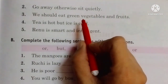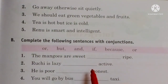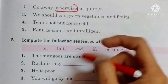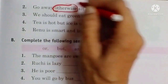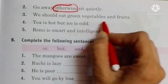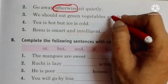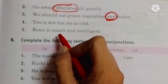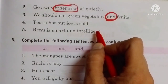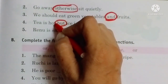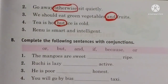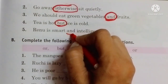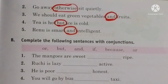Go away, otherwise sit quietly. In this sentence, 'otherwise' is a Conjunction. We should eat green vegetables and fruits — 'and' is the Conjunction. Tea is hot but ice is cold — 'but' is the Conjunction. Renu is smart and intelligent — 'and' is the Conjunction.